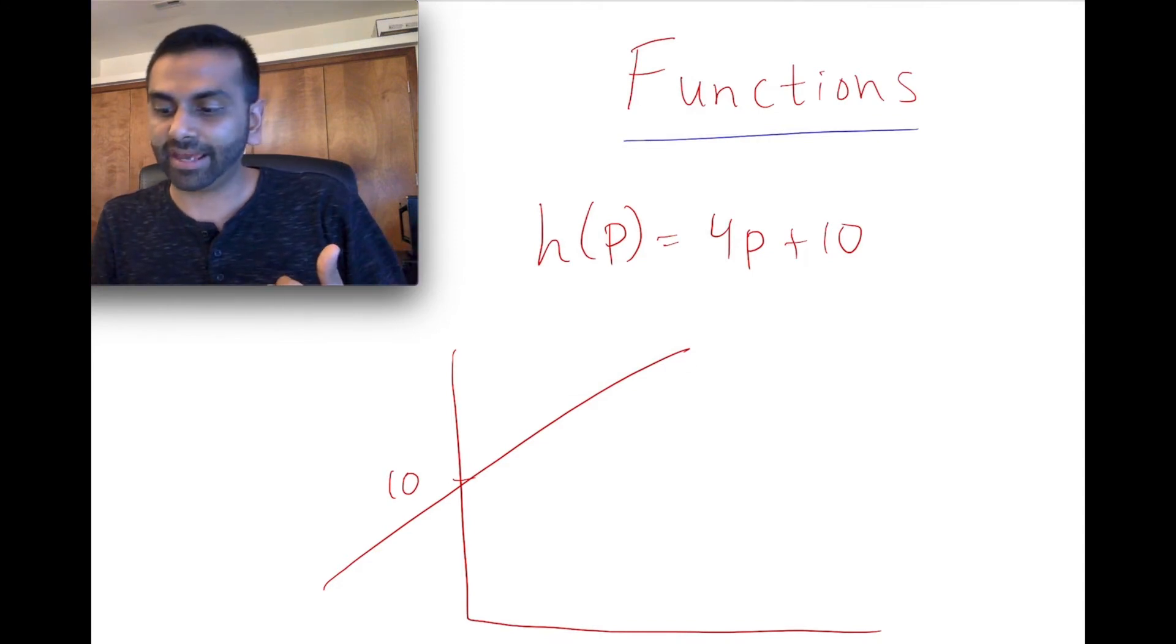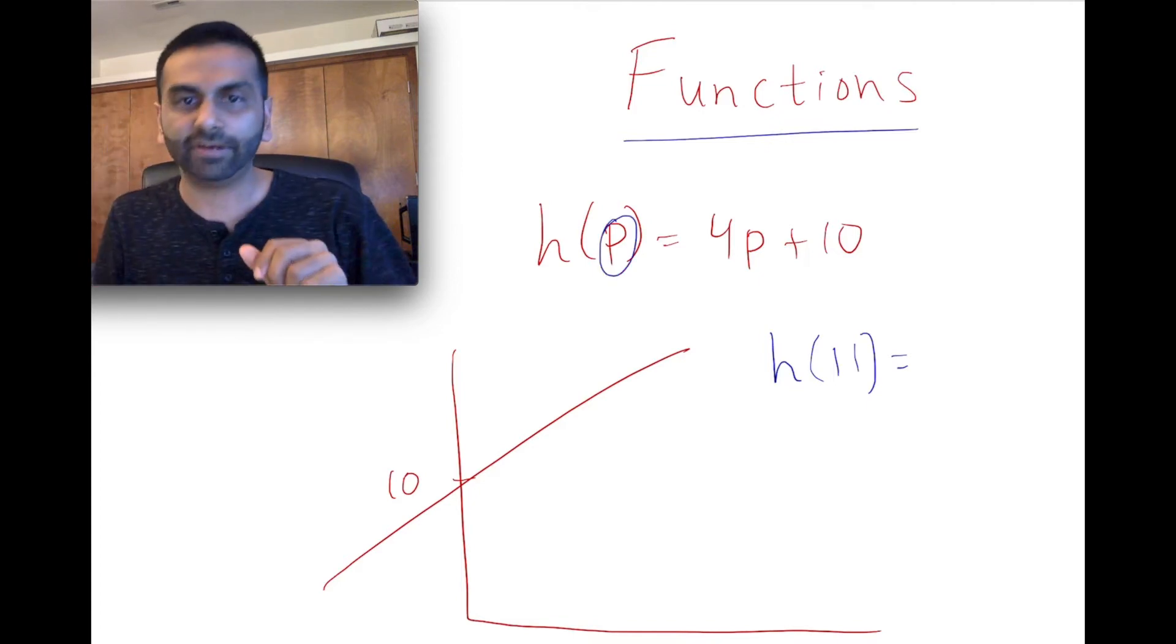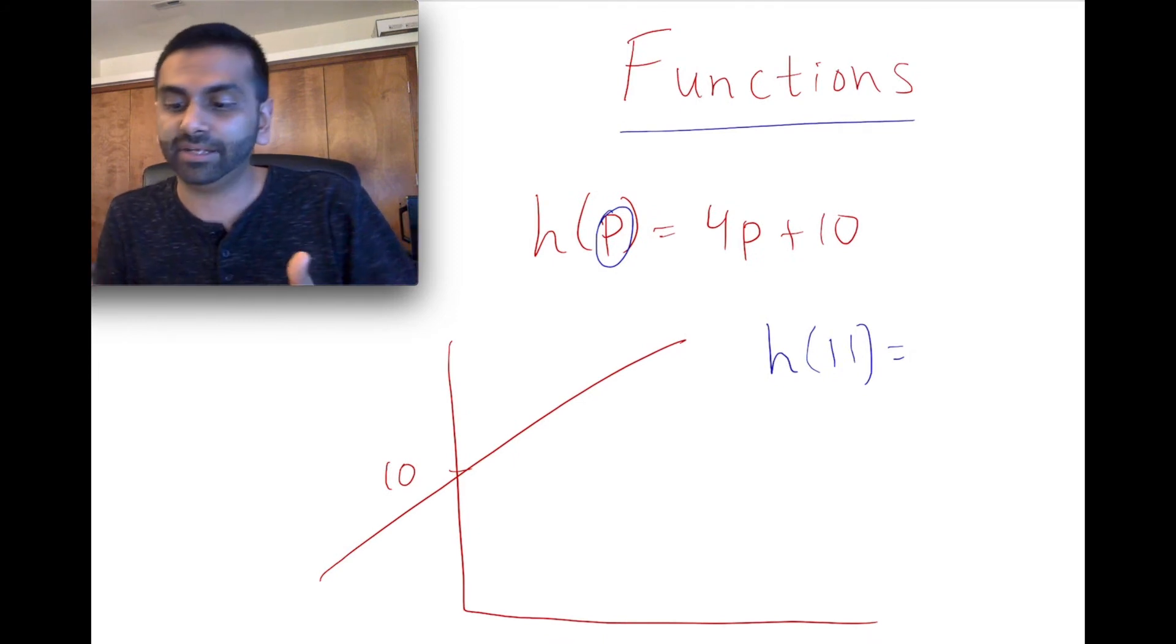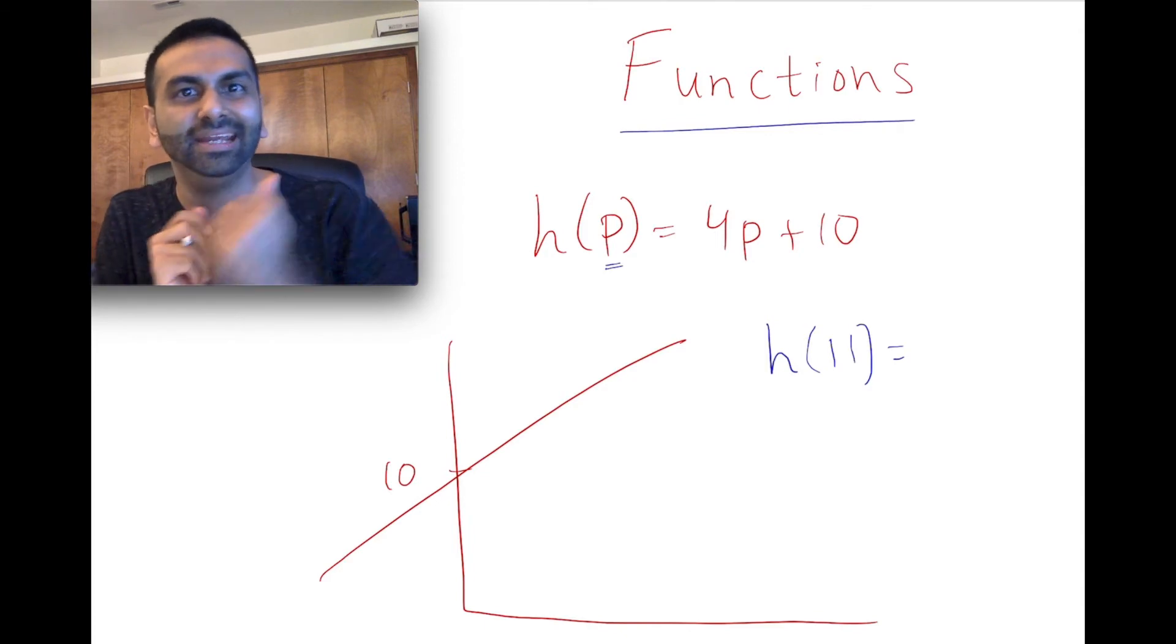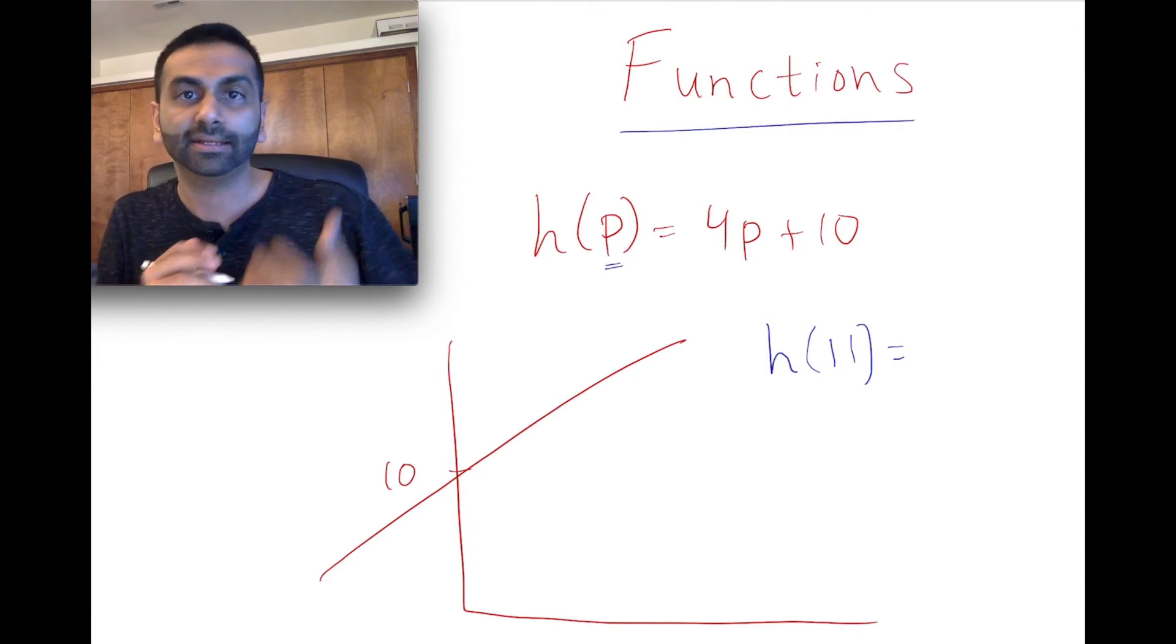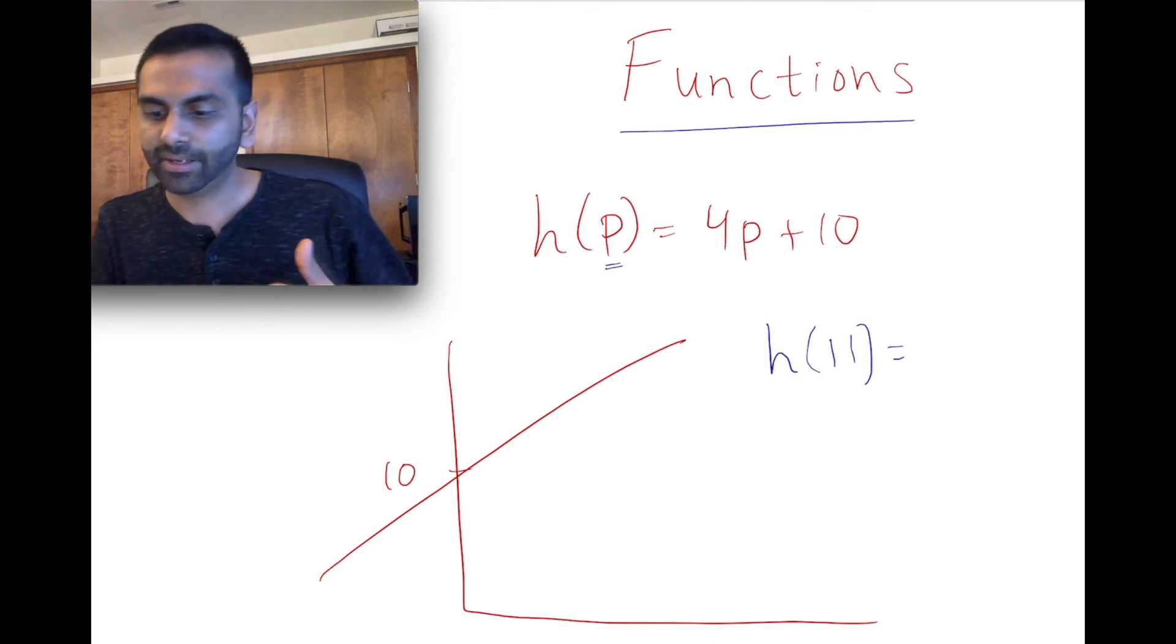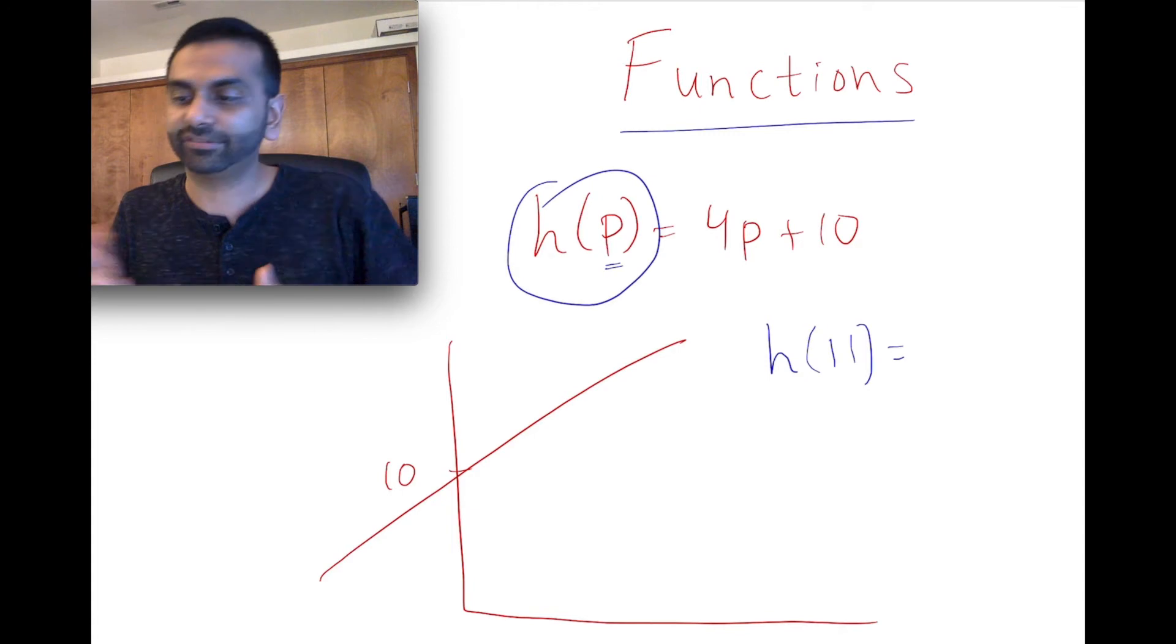Here, if I were to ask you, what's h of 11, all you do is you plug in 11 in for p. Because again, here, your x variable is really called p here. So if you're looking at price and quantity or something here, again, the thing inside the function, inside that, that's your input variable. It's your independent variable. And the thing on the outside, your dependent variable or your y variable is whatever h of p is.